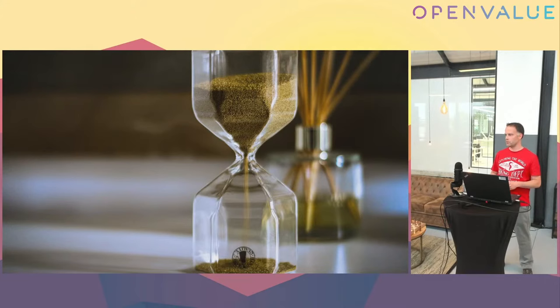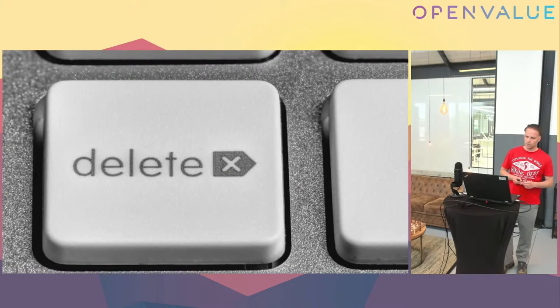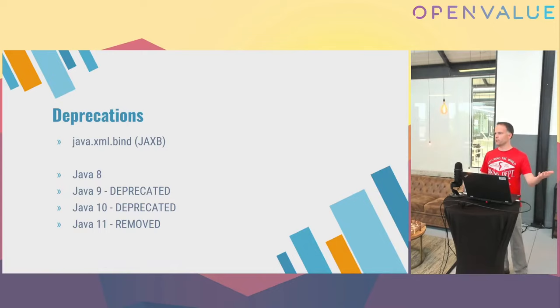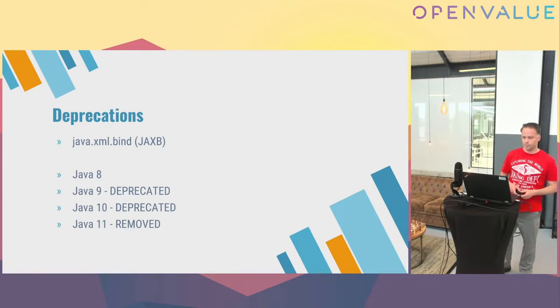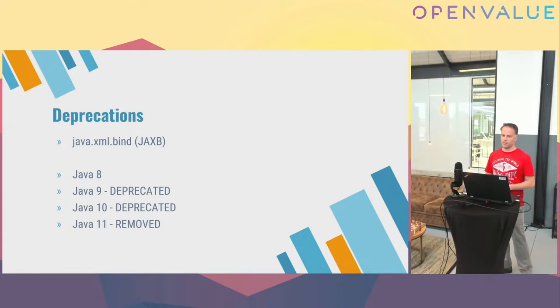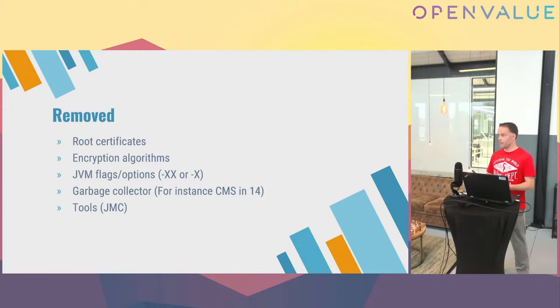When I talk about deleting, it's often not really deleting — Java in general deprecates stuff first. For example, in Java 9 something is deprecated; you get warnings. If you fix it then, by the time it's actually removed you've already solved your issue. What can be removed can actually be anything: methods, certificates, or complete applications — even Java Mission Control.